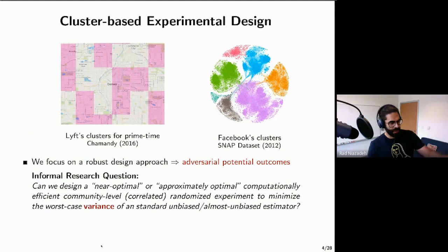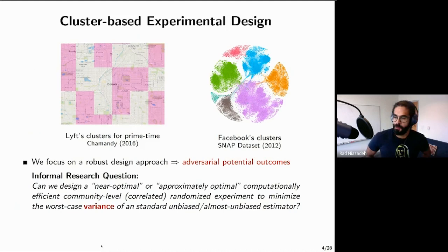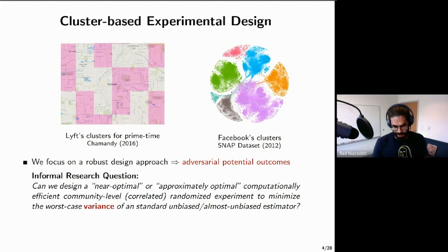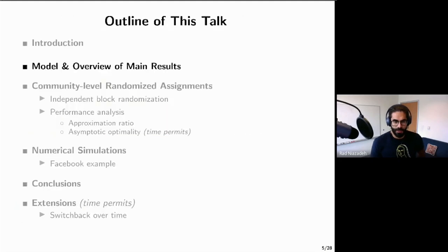There are different models for potential outcomes generated after running an experiment. In this talk I focus on a particular model called the worst-case potential outcome, or adversarial potential outcome model. Once I tell you about the model, everything will be completely clear.